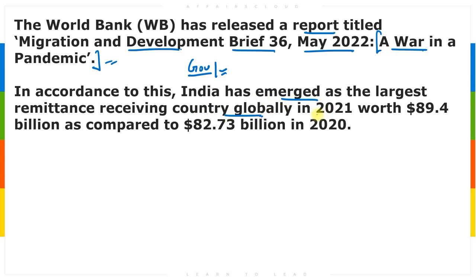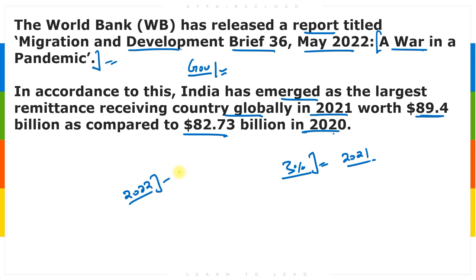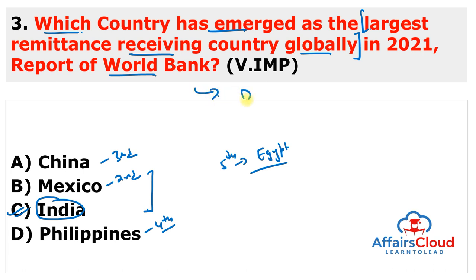India emerged as the largest remittance receiving country globally in 2021, worth $89.4 billion, compared to $82.73 billion in 2020. Remittance accounted for only 3% of India's GDP in 2021. For 2022 and 2023, India's remittances are expected to grow at 5%. Key World Bank facts: President is David Malpass, established in 1944, 189 member countries, headquarters in Washington DC.